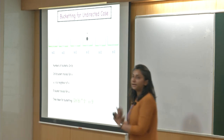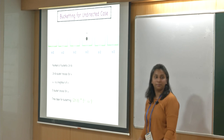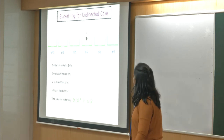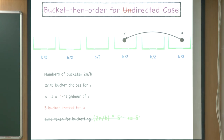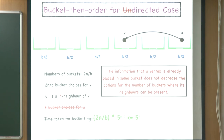For directed graphs, this approach fails. Even when V's bucket is decided, if a neighbor appears after V it contributes to a backward arc, and in that case there is no control over which bucket it goes to. This is where the undirected bucketing template breaks down.